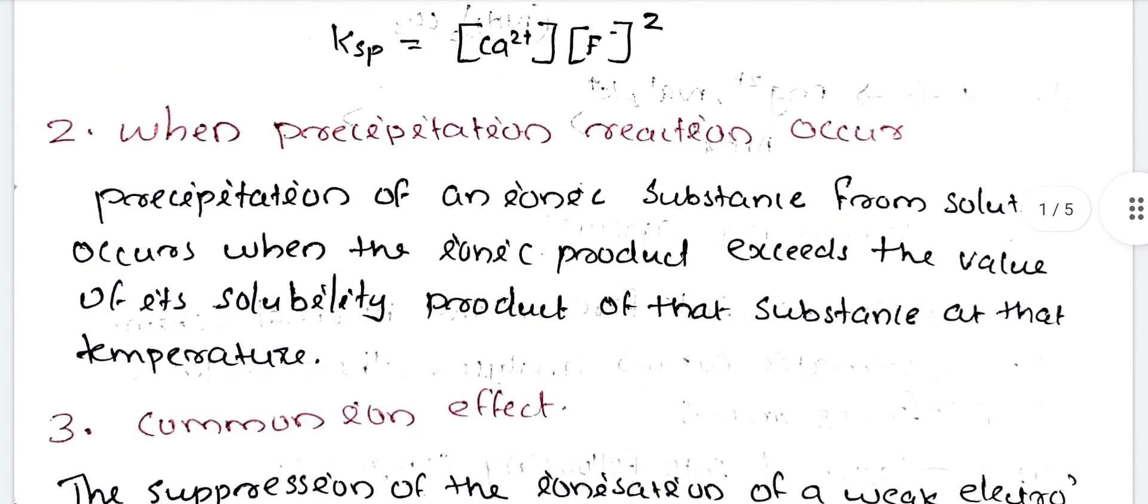When does the precipitation reaction occur? The precipitation of an ionic substance occurs when the ionic product exceeds the solubility product of the substance at that temperature.